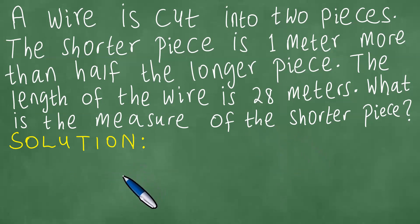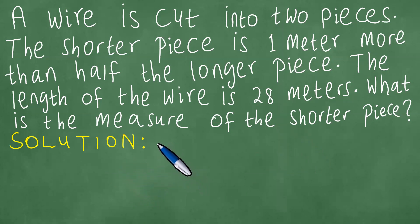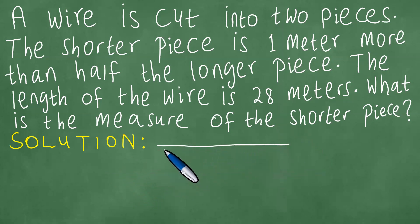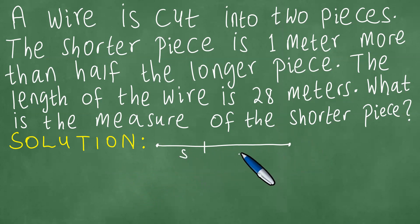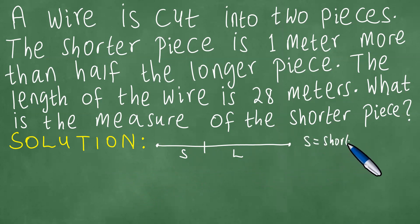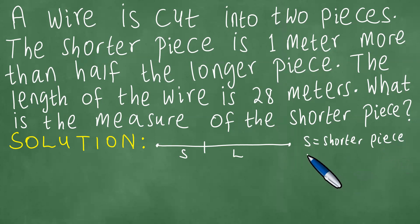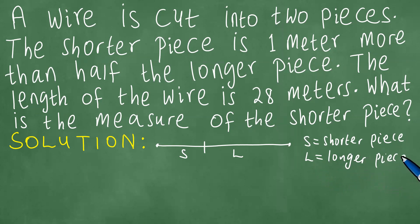To solve this problem, one of the first things to do is to have a sketch of what is happening. Here is the wire, and this wire is cut so there is a shorter piece — let's call it S — and L being the longer piece. So S is the shorter piece and L is the longer piece.